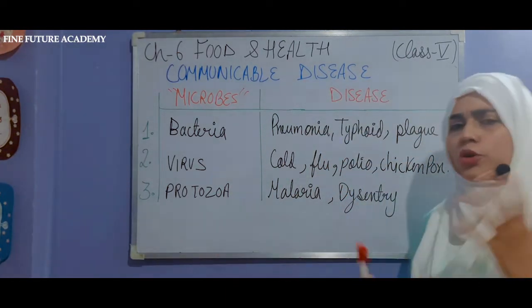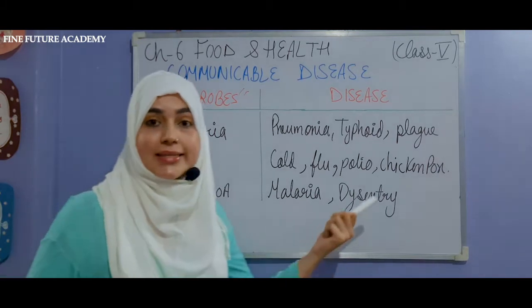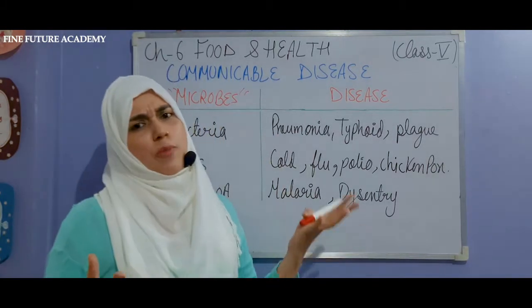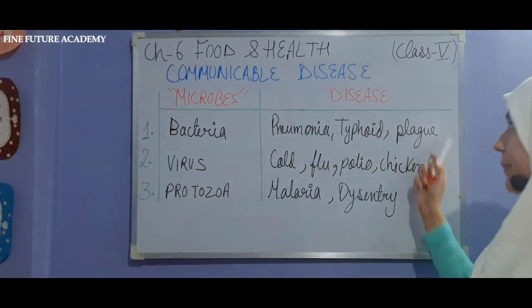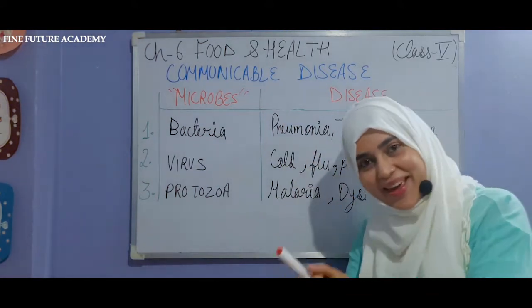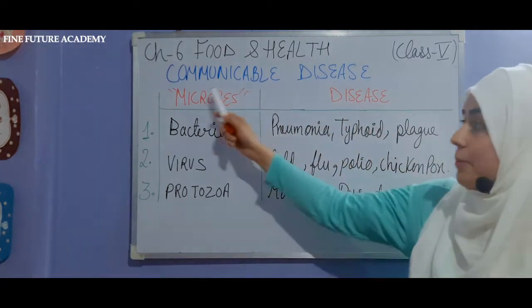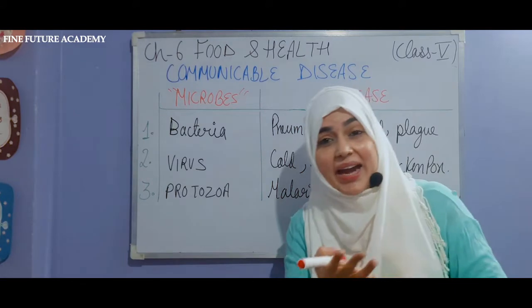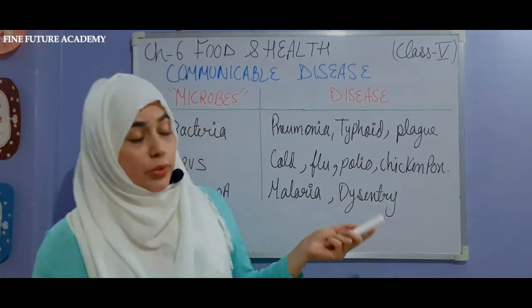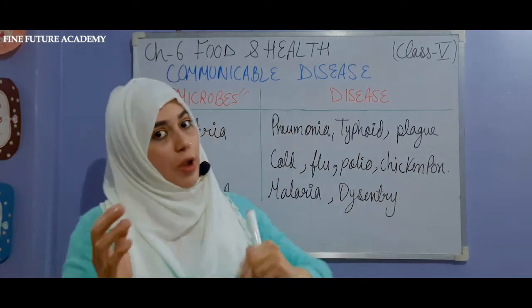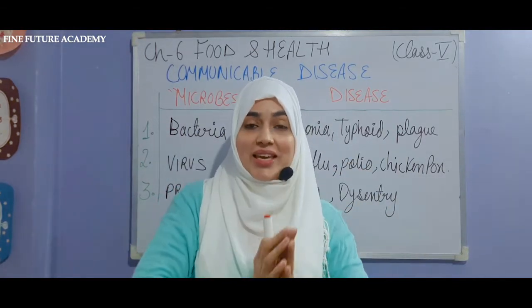The third microbe is protozoa. Protozoa causes diseases like malaria and dysentery. In malaria, you have fever and cold and the whole body gets worse. These microbes are on your hands and skin. So if you have a child or student in your house and you don't protect yourself from them, the disease will come to you because these are communicable diseases.